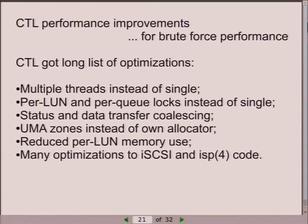Even with all that offload, there are still situations where storage must actually read and write something, and that should be done fast enough. CTL got a bunch of optimizations to improve performance: multiple worker threads instead of a single one, fine-grained locking with per-LUN and per-queue locks instead of one big lock, and other optimizations. For iSCSI and fiber channel protocols, CTL can coalesce command completion and data transfer completion operations to reduce the number of interrupts or calls to hardware. For fiber channel, a write operation can be reduced from three interrupts to two—about a 30% performance benefit.